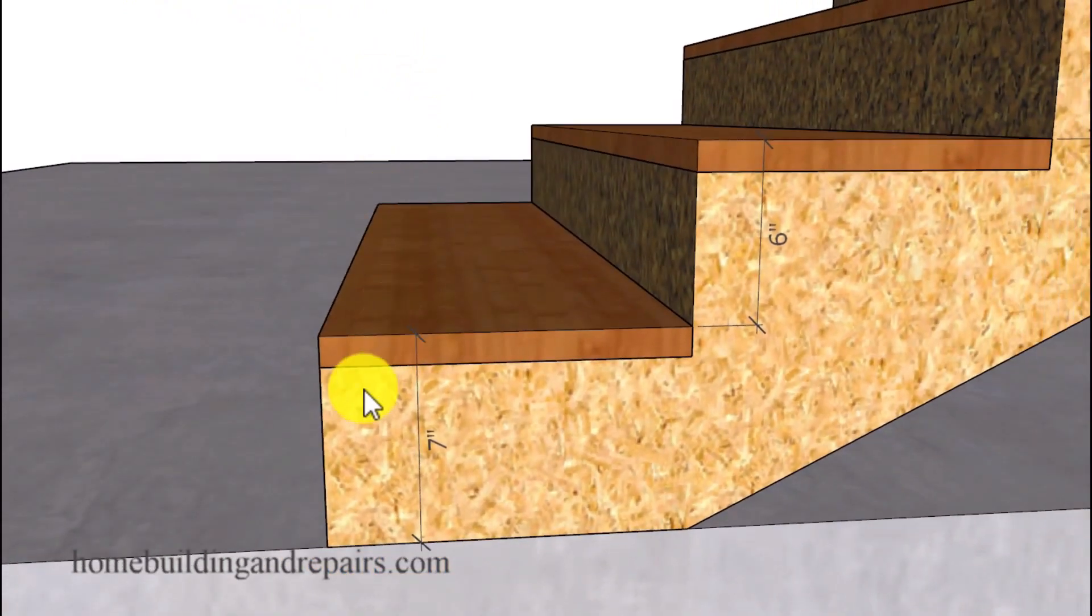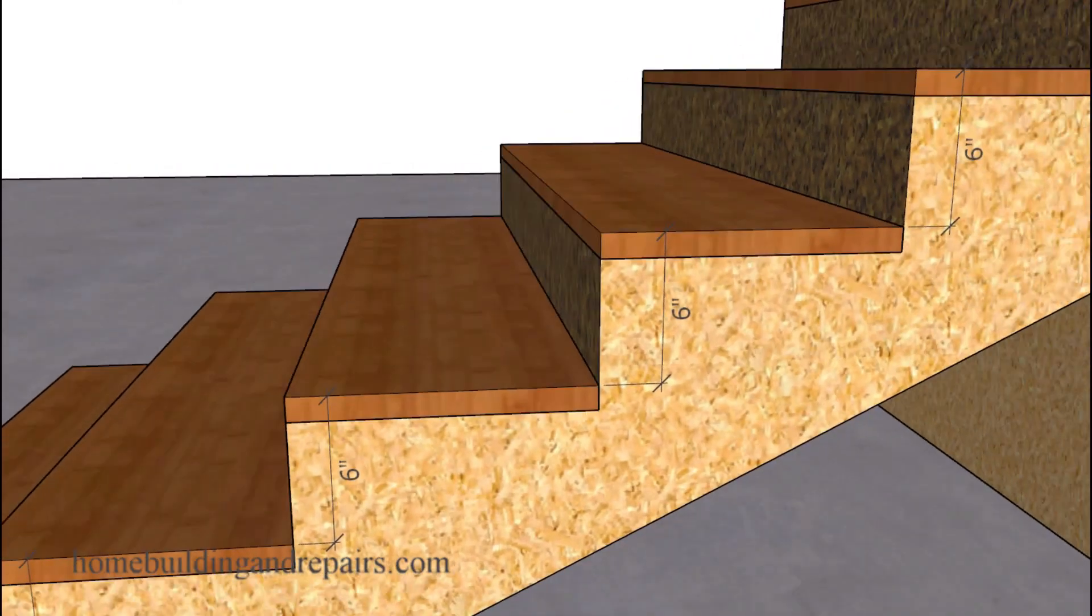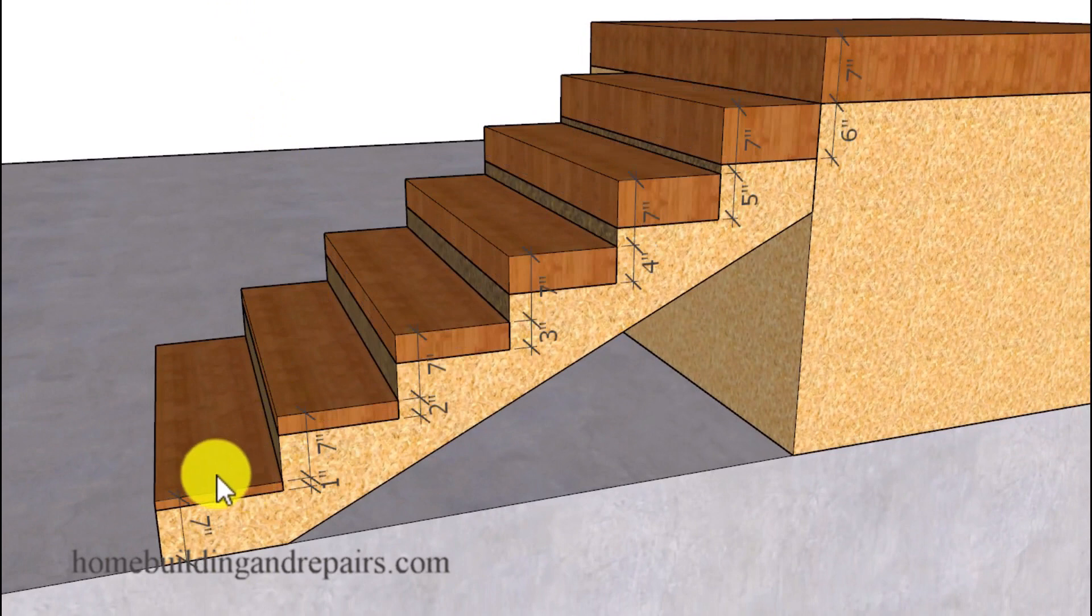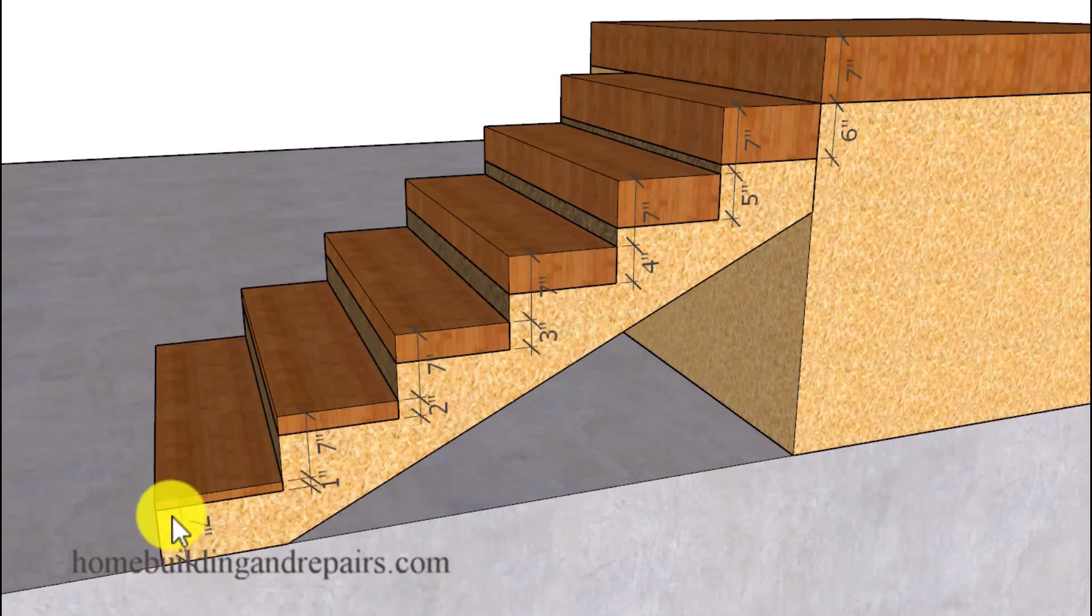Because all that's going to do is make a difference at the top and the bottom. It won't make any difference at all to all of the steps in between. So to solve this problem, we're going to need to increase the increments of each step by the difference between the existing riser and the new riser height.